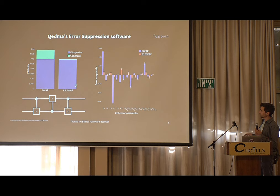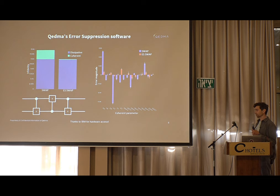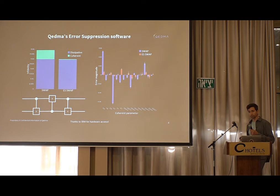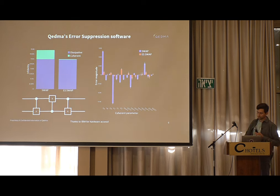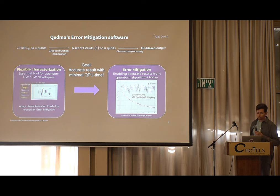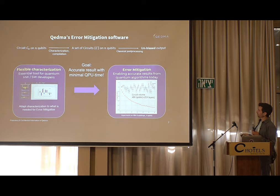If you want to eliminate the dissipative contribution, you have to pay a resource. We go for error mitigation, and the resource is QPU time. The other qubits are in there — you can make use of them — but what you pay for is the QPU time, so that's the resource you should care about.